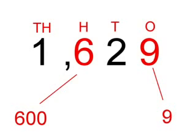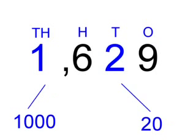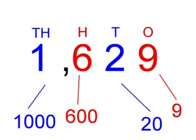Now to the place value of the 1 and the 2. The 1 represents 1,000 in the thousands column, and the 2 represents 20 in the tens column. Now we have the 1,000 in the thousands column, the 600 in the hundreds column, the 20 in the tens column, and the 9 in the ones column.